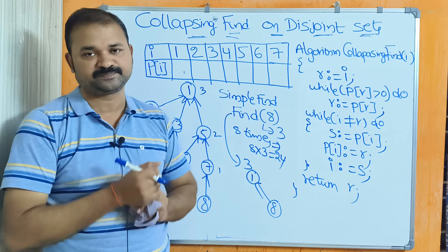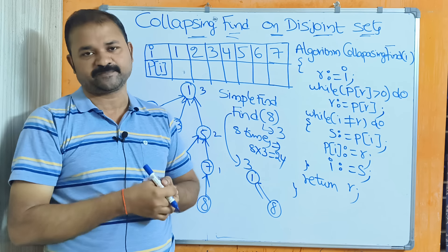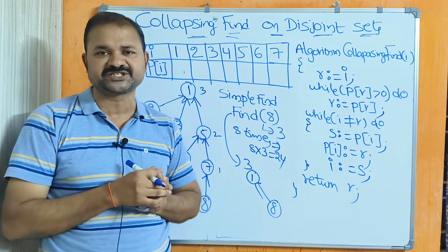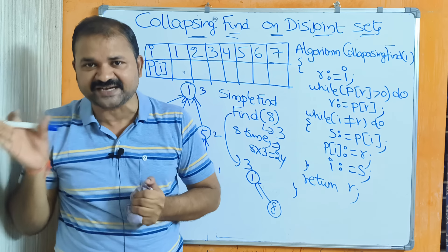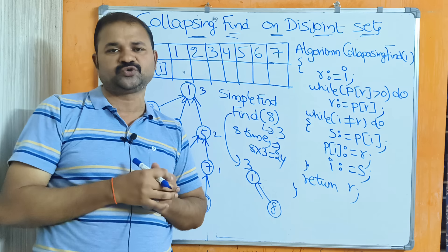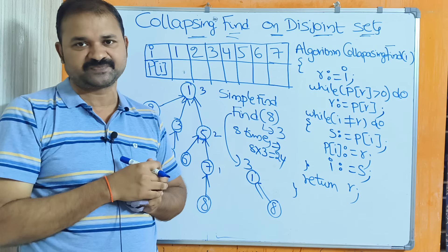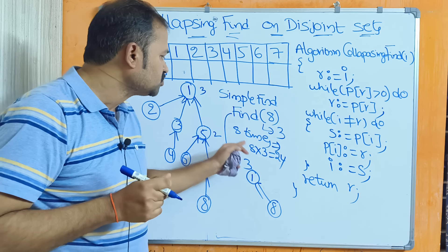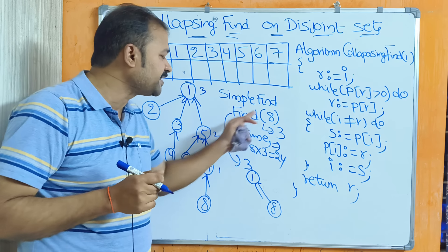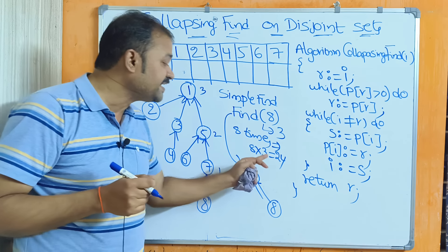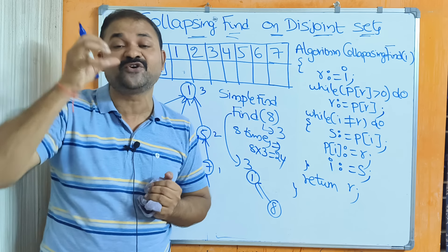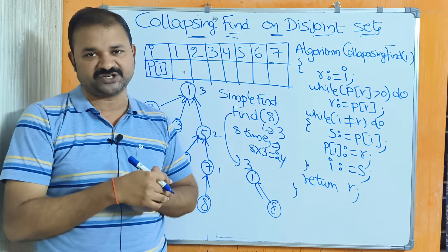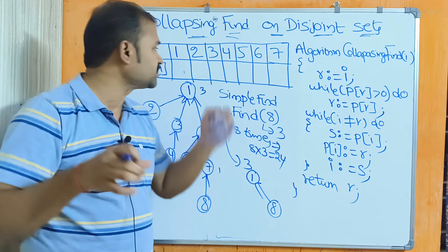Assume we want to perform find(8) eight times. For the first find(8), 3 comparisons are needed. For each of the subsequent 7 operations, 3 comparisons are also required. So 8 times 3 equals 24 total comparisons required if we use simple find operation.